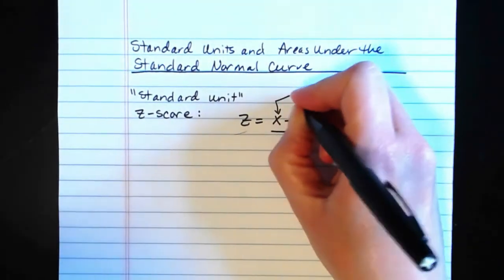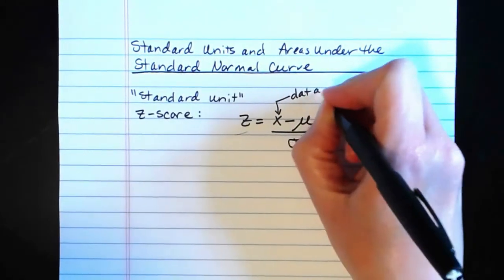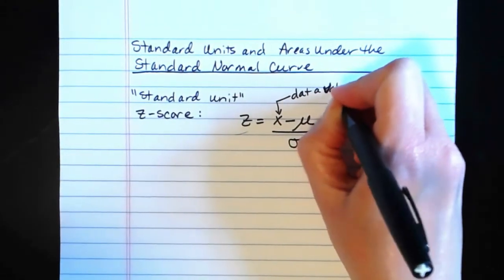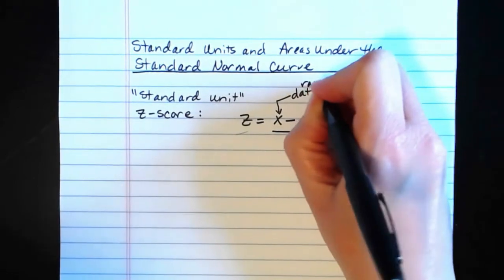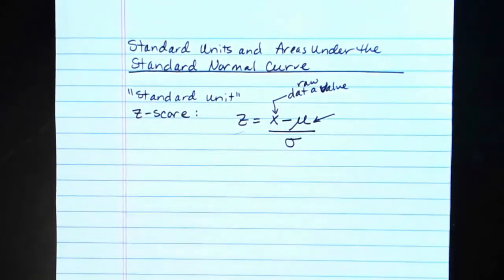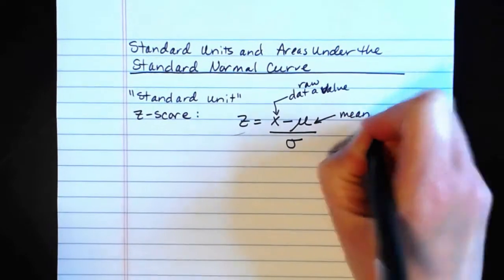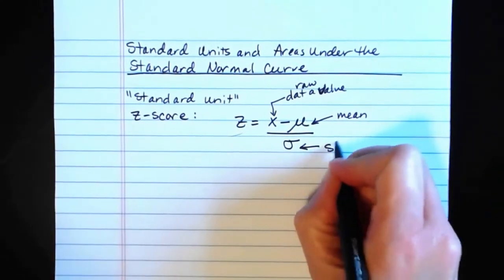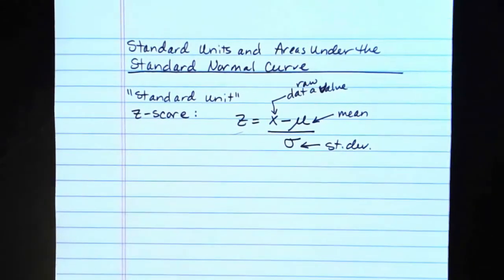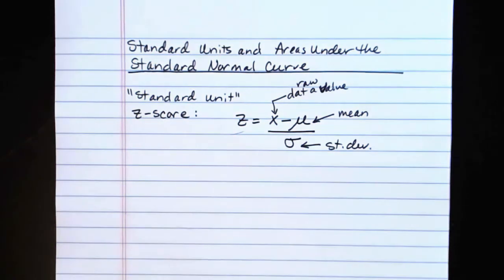X here is an actual raw data value. Mu is the mean of the normal distribution that you're dealing with. And sigma is the standard deviation of the normal distribution that you're dealing with.